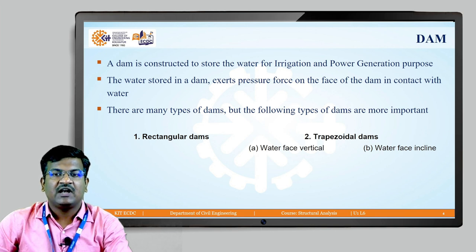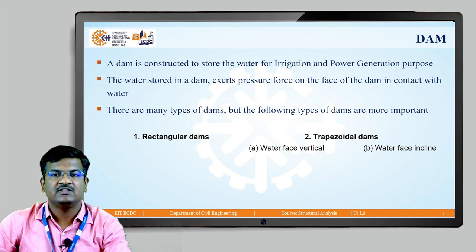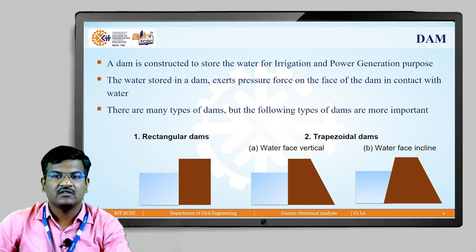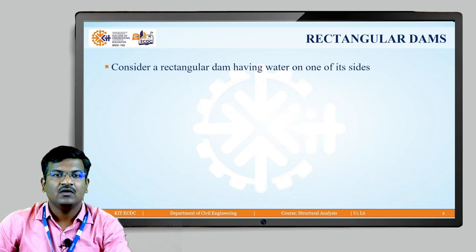In the trapezoidal dam there are two types: first, the water face is vertical; and second, the water face is inclined. The rectangular dam is just like a wall. Here we discuss about the rectangular dam — consider one rectangular dam having water on one side.